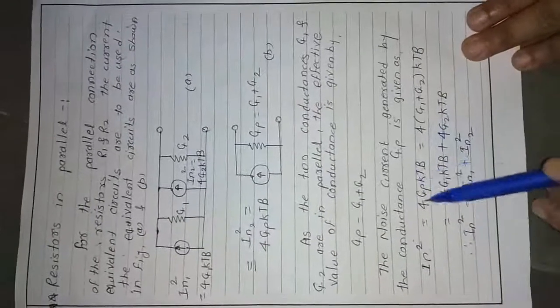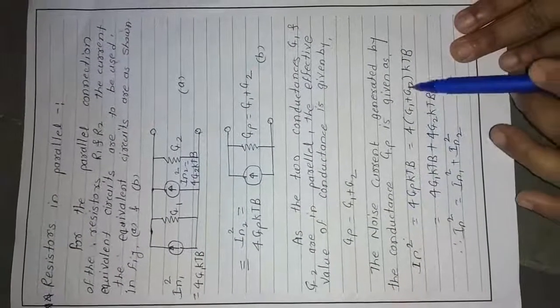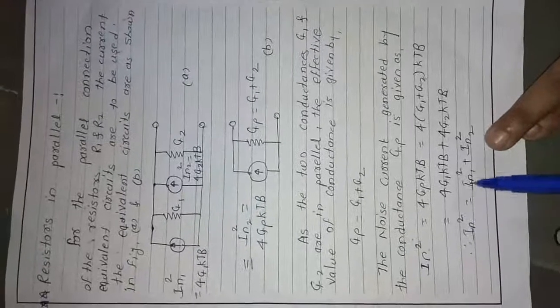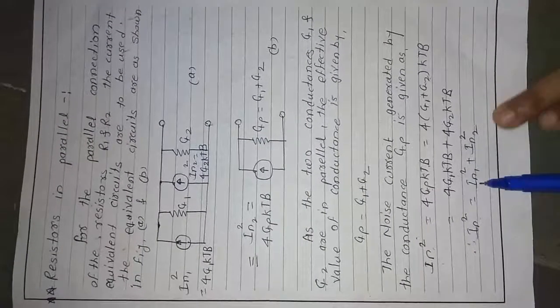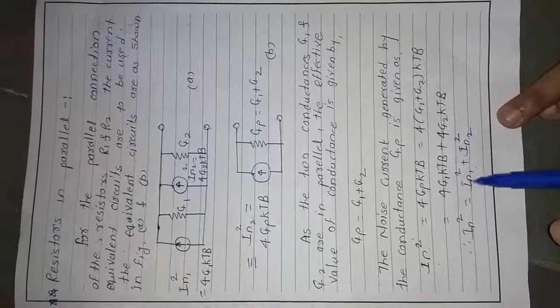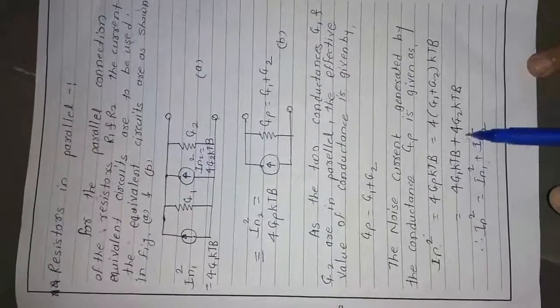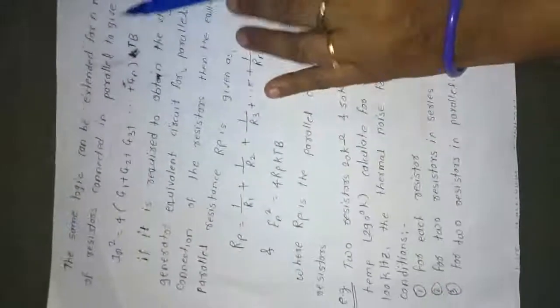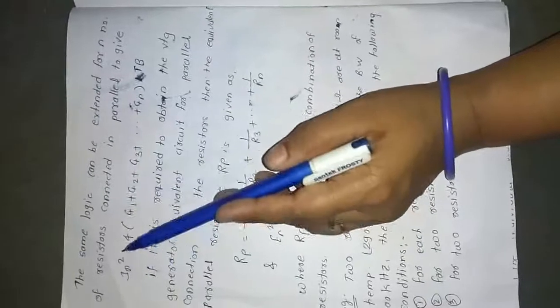Replacing Gp with G1 + G2 and expanding: IN² = 4G1KTB + 4G2KTB, which gives IN² = IN1² + IN2². This means conductance G1 produces IN1² and conductance G2 produces IN2² — the equivalent current noise for each conductance.